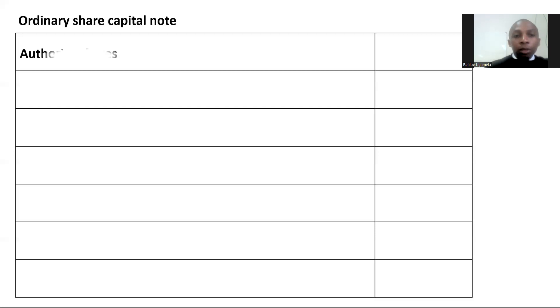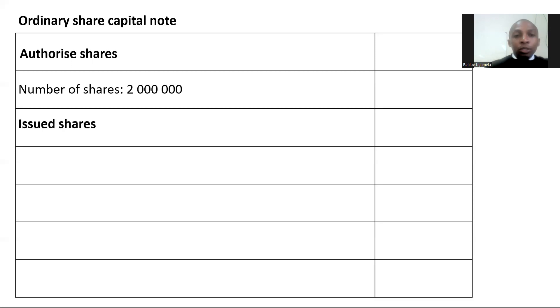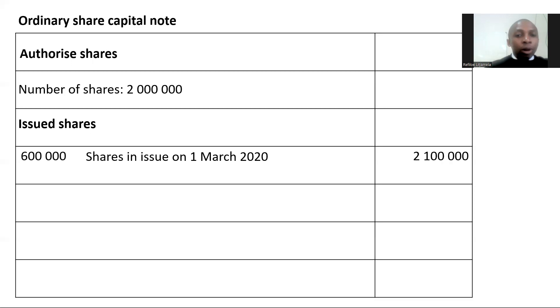In the ordinary share capital node, I will put down the number of authorized shares, which is 2 million. Under issued shares, I will put in the opening balance: number of shares at the beginning of the year were 600,000, and the share capital raised from that will be 2 million 100,000.